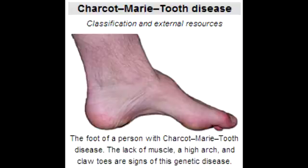What is Charcot-Marie-Tooth Disease? It is a group of progressive hereditary nerve disorders related to the defective production of proteins involved in the structure and function of peripheral nerves or the myelin sheath. Basically, these are inherited disorders of the peripheral nervous system characterized by progressive loss of muscle tissue and touch sensation across various parts of the body.